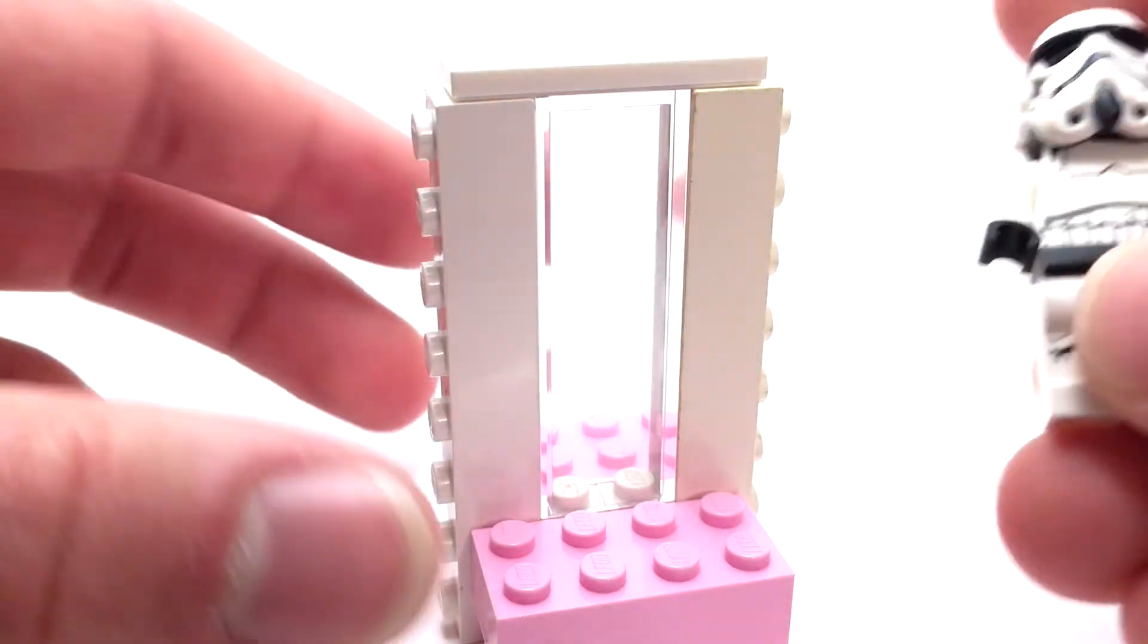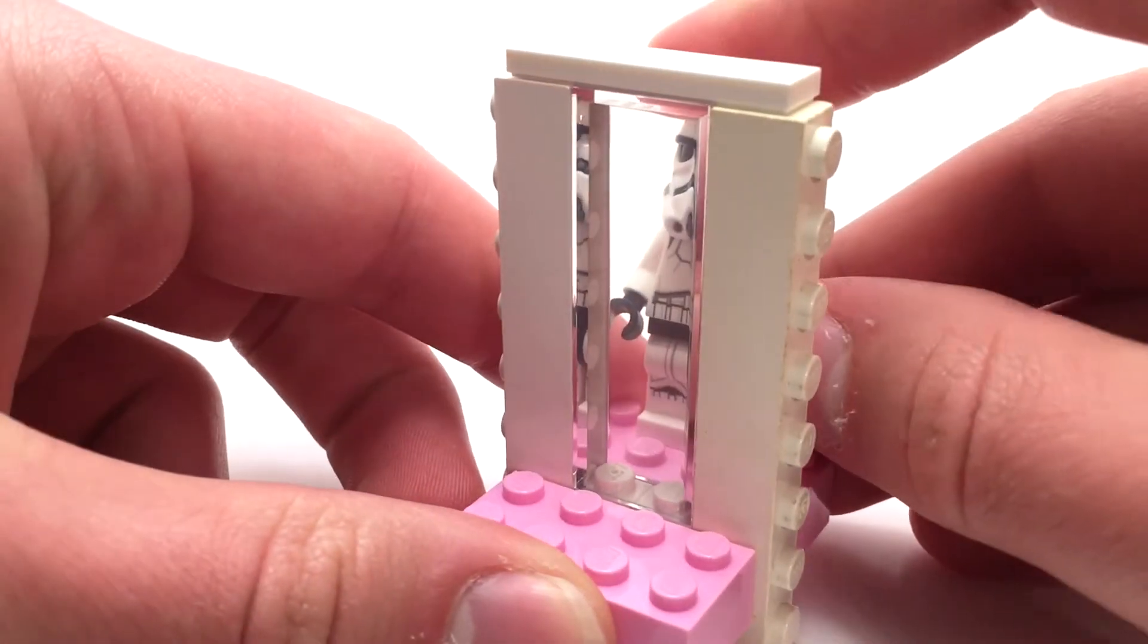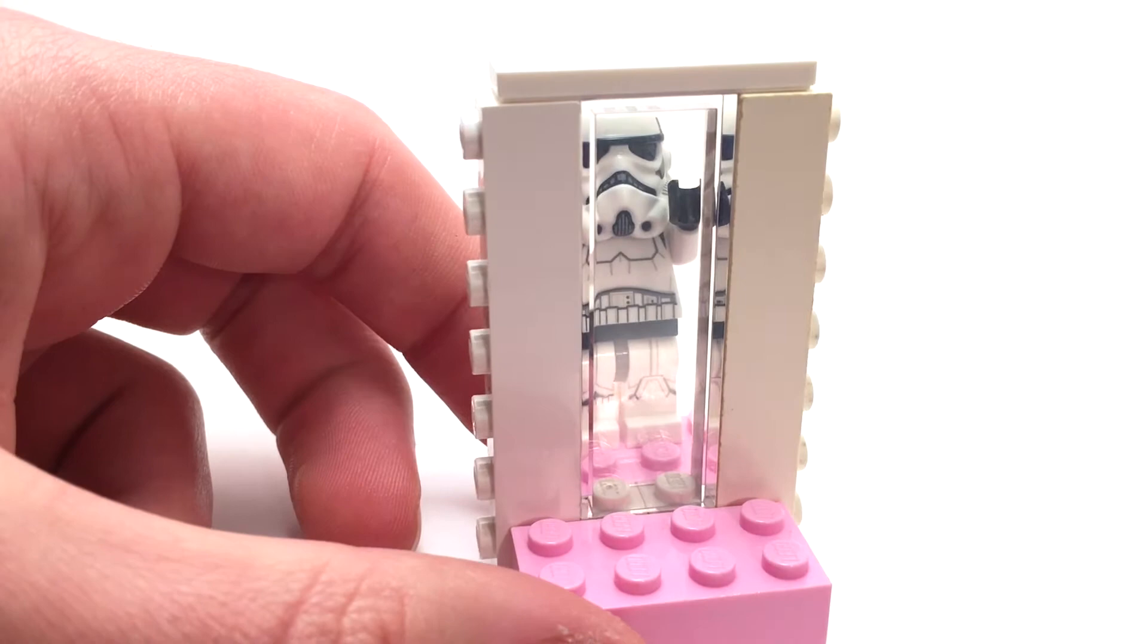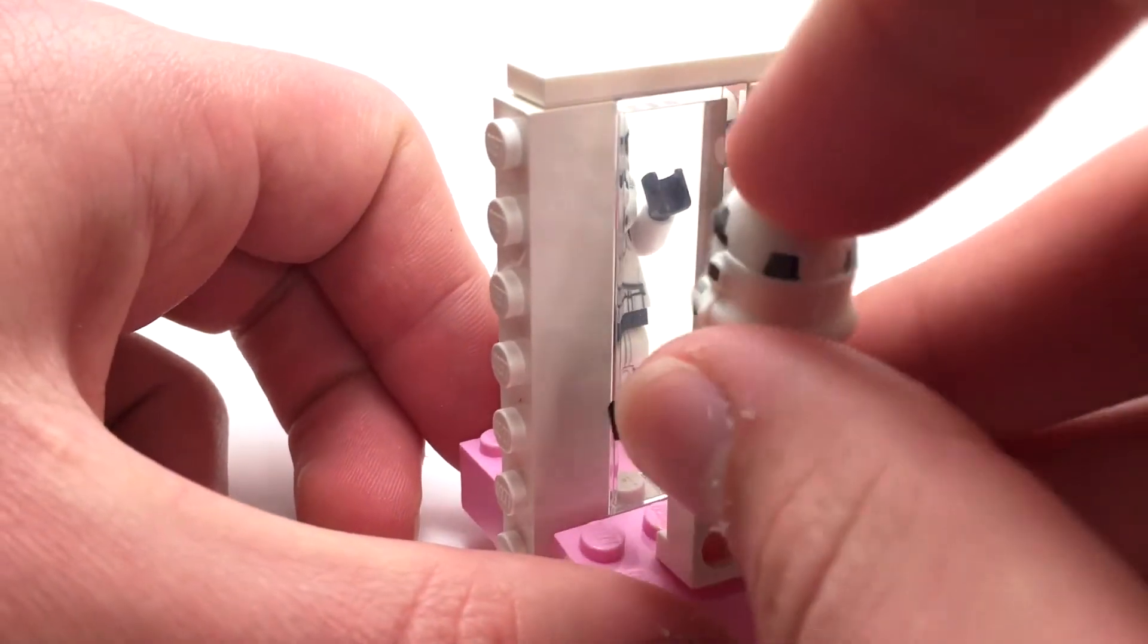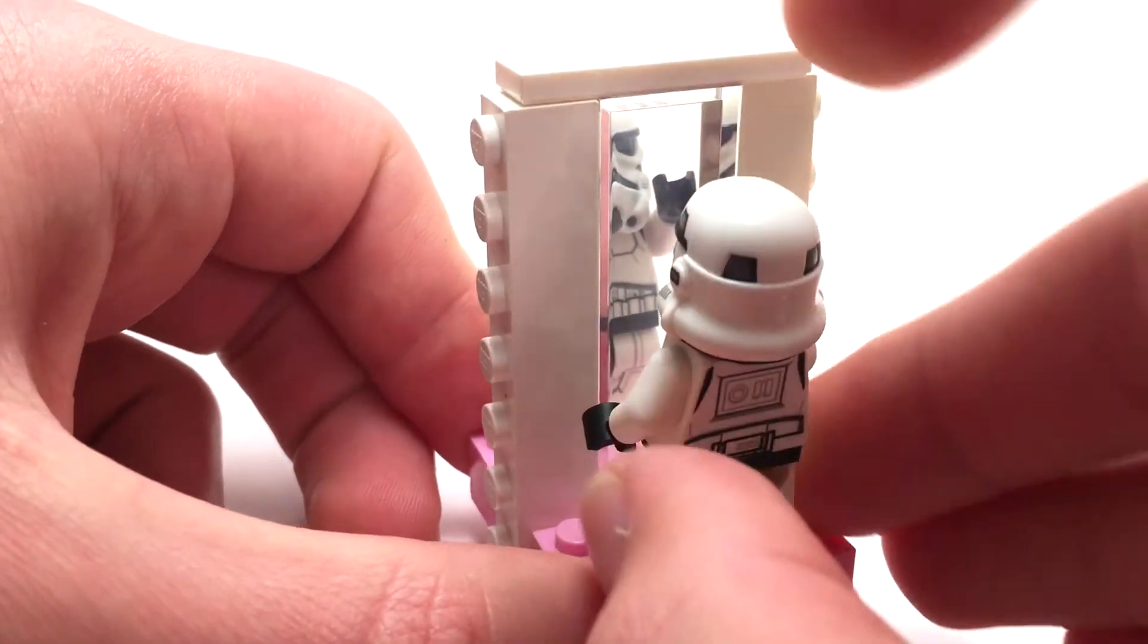And the really cool thing about this is that if you take a couple minifigures, like let's say these stormtroopers here, and attach them on just like so and kind of line them up really nicely.